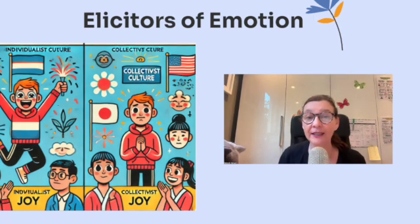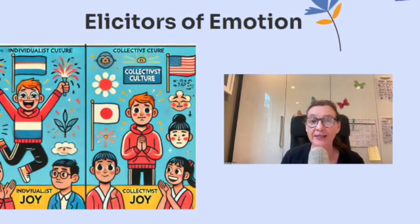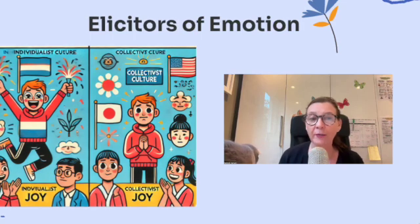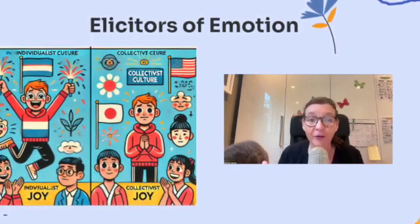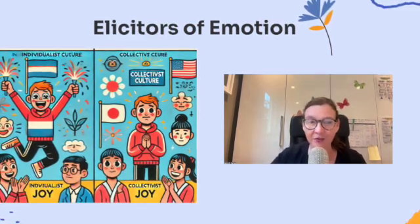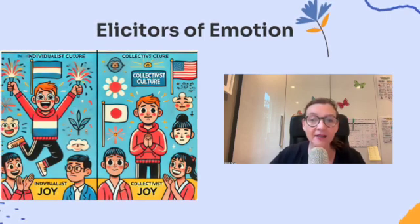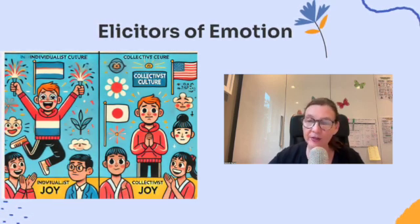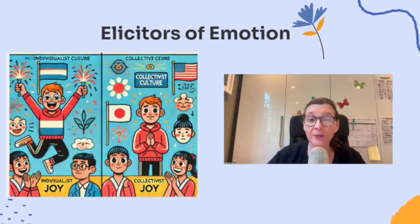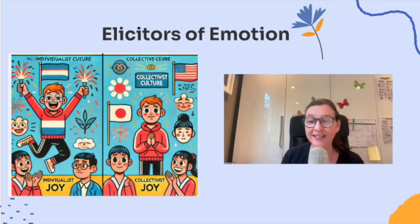So what triggers our emotions? It's something called elicitors of emotion — these are the events or situations that spark an emotional response. For example, think about winning a competition. For most of us, that would elicit joy. But how we express that joy can vary a lot depending on our cultural norms. In some cultures, people might show their joy by cheering loudly, jumping up and down, or hugging everyone around them — common in individualist cultures that encourage open, expressive behavior. But in collectivist cultures, people might still feel joy but express it in a more subtle way, like smiling modestly or quietly acknowledging their success so they don't stand out too much. While the elicitor is the same, the way we respond emotionally can be shaped by the culture we live in.